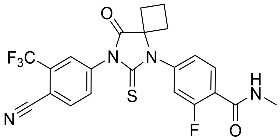The drug is a diarylthiohydantoin derivative and is closely related to enzalutamide and apalutamide. Both RODE-162 and enzalutamide show 5- to 8-fold higher affinity for the AR than the first-generation NSAA bicalutamide, and only 2- to 3-fold lower affinity than dihydrotestosterone (DHT).